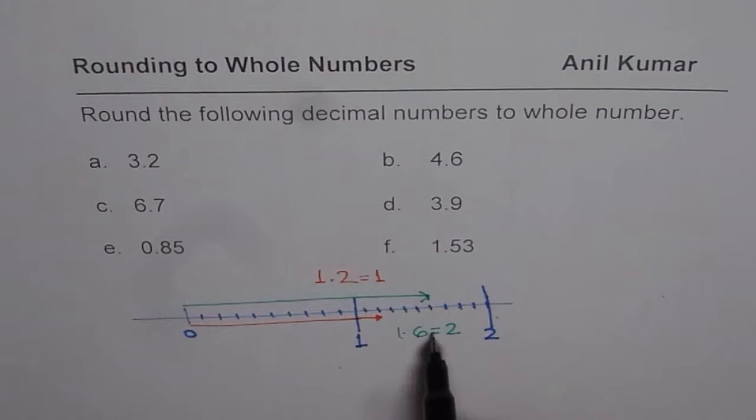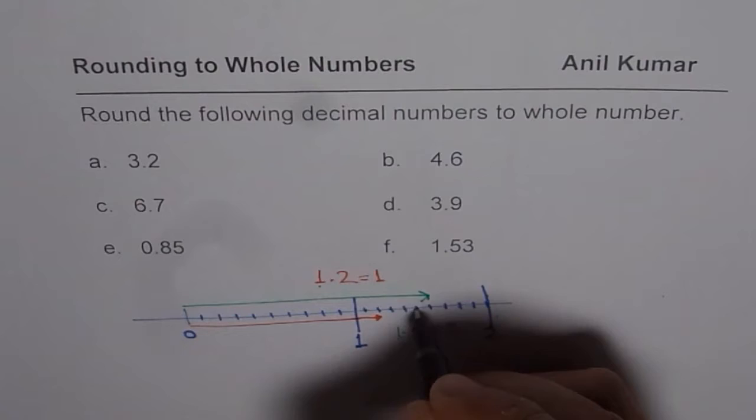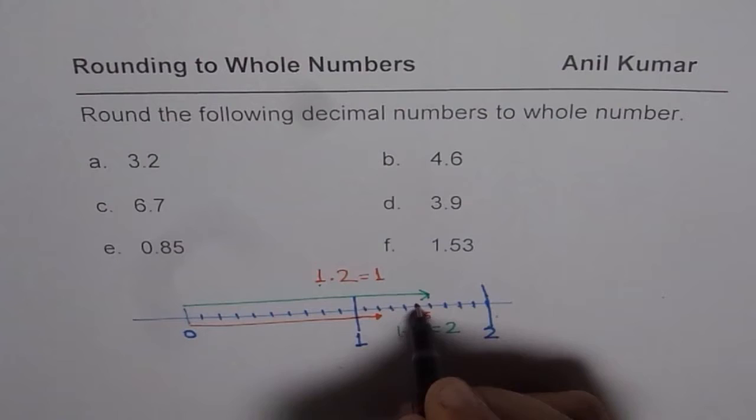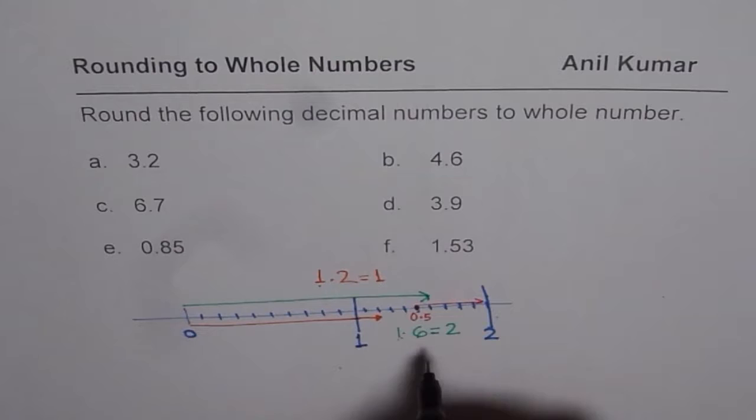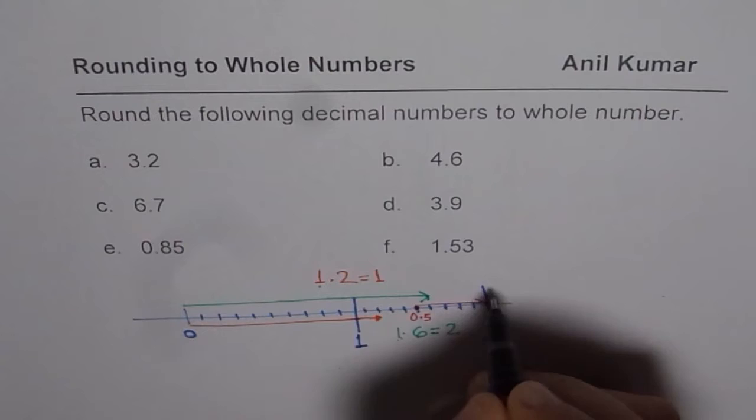So if you are closer to a bigger whole number, you round it to that higher number, or you round to the number itself, which is given here as a whole number. So that is the concept. Now, in between, what we have here is 0.5, right? So in between, this is 0.5. So we always check if the number is on the right side of 0.5, including 0.5, you round higher.